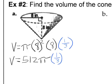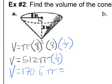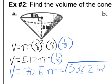So 512 divided by 3, or multiplied by 1 third, is 170.6 repeating pi. And then when we actually multiply that by pi, we get about 536.2 inches cubed. Okay, there's that one.